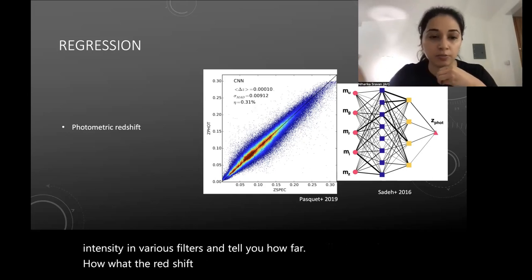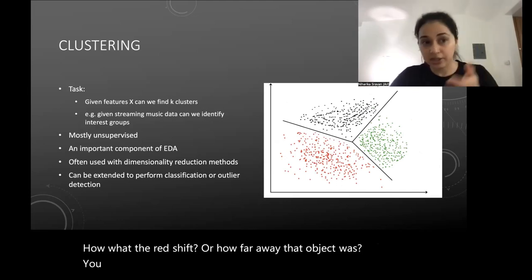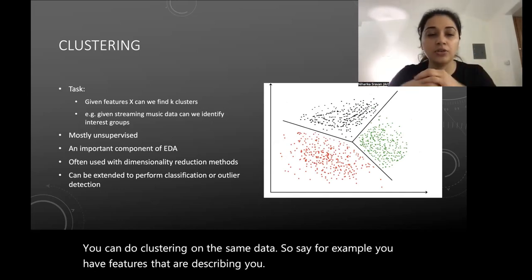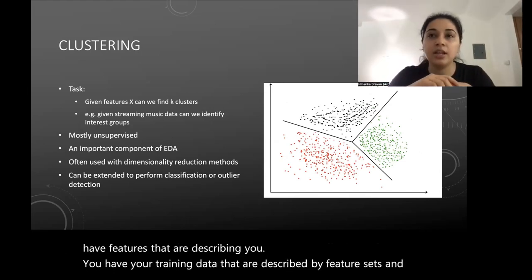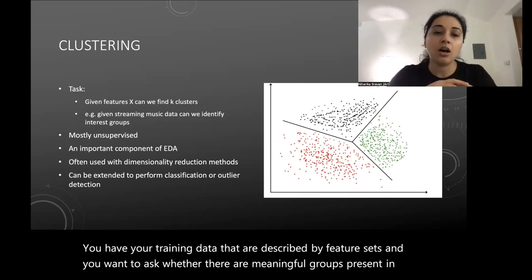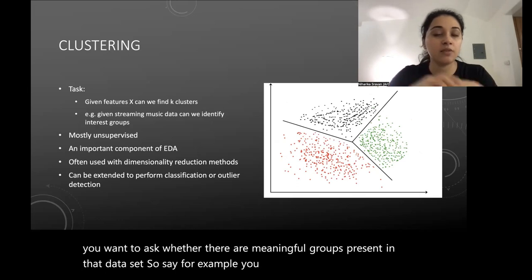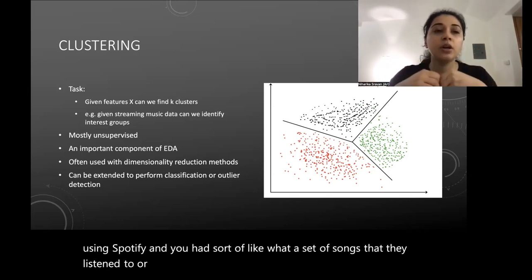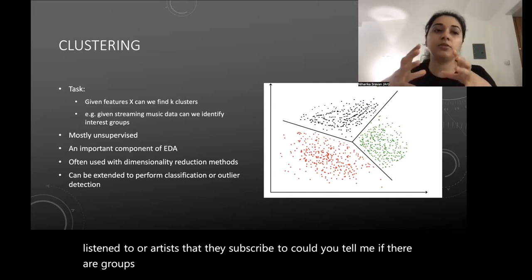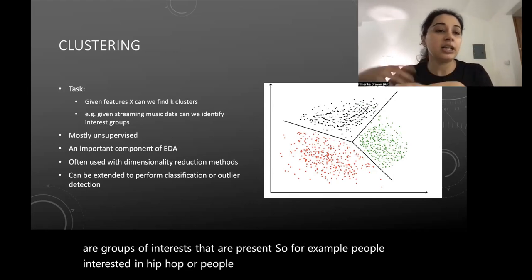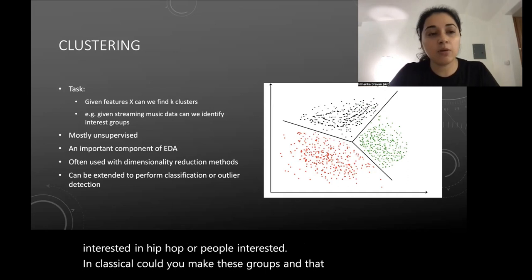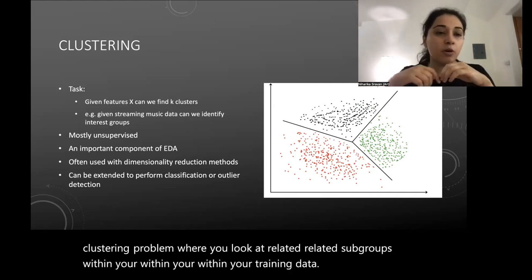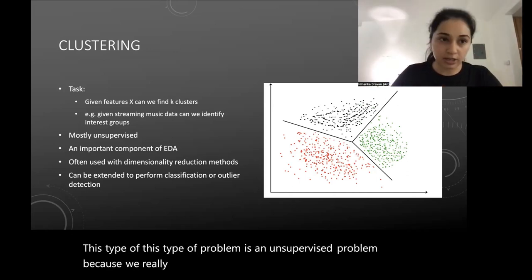You can also do clustering on data. Given features X describing your training data, you ask whether there are meaningful groups present. For example, given Spotify user data on songs and artists listened to, could you identify groups of interest like people who prefer hip-hop versus classical? That would be a clustering problem — finding related subgroups within your training data. This is an unsupervised problem because you don't care about target values; you're just looking at the structure of the data itself.